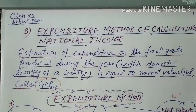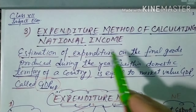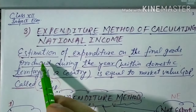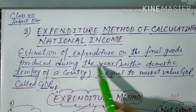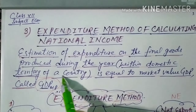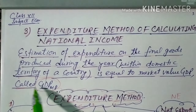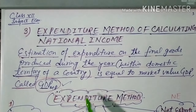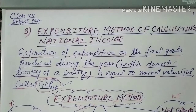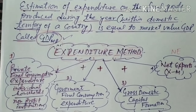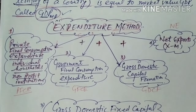The next and last method of calculating national income is the expenditure method. Estimation of expenditure on the final goods produced during the year within the domestic territory of a country equals the market value — GDPMP. By adding various expenditures we get gross domestic product at market price. The first and third methods are calculated at market price.